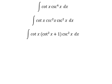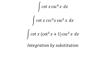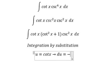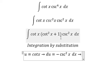I will use integration by substitution. Let u equal cot x. Then du equals negative csc² x dx. Because we don't have the negative sign in the integral, we put the negative next to du.